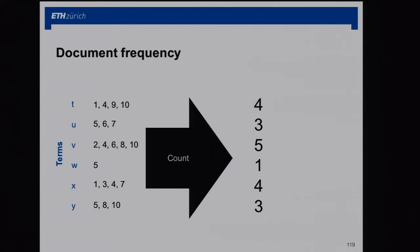We add document frequency counts in the index — for example, a term appearing in three documents gets a count of three. This is the standard inverted index. You are going to build one programmatically in the exercise next week with Python. Never believe you truly understand something before you actually program it — you bump into all the little details.